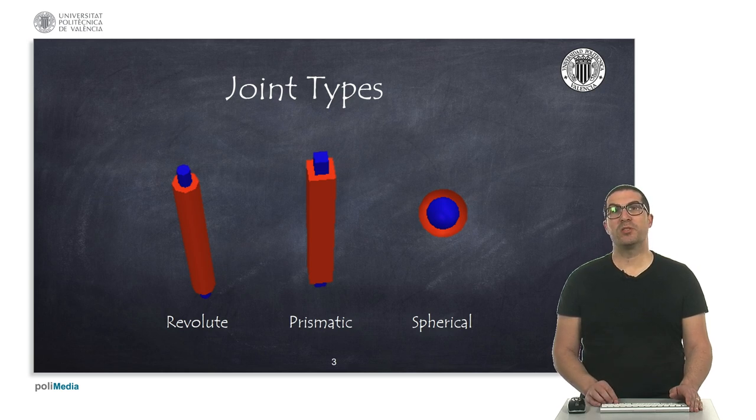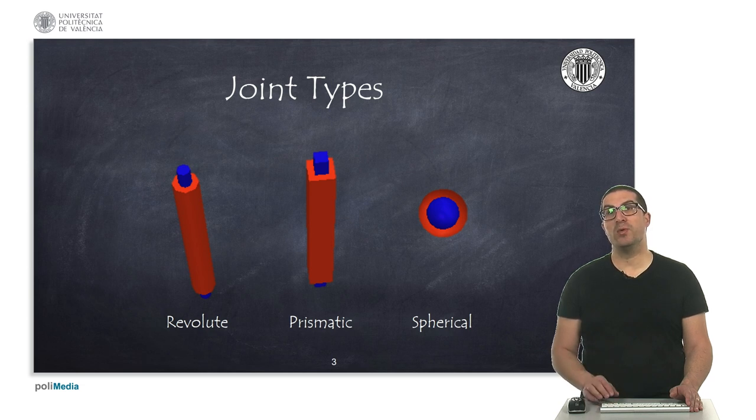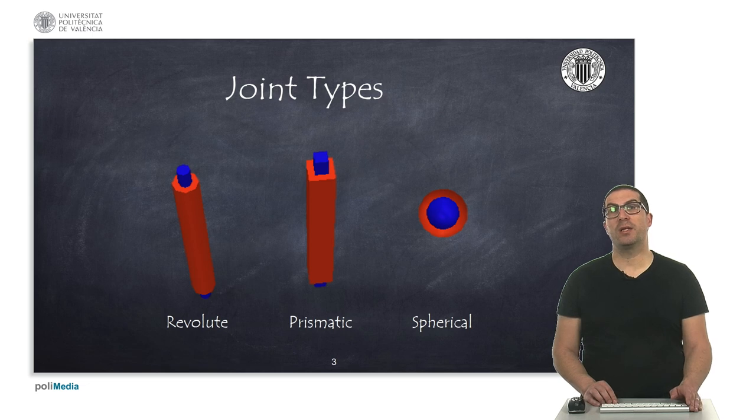Both revolute and prismatic joints have one degree of freedom, while spherical joints have three degrees of freedom. Indeed, they can be seen as three revolute joints intersecting at the same point.